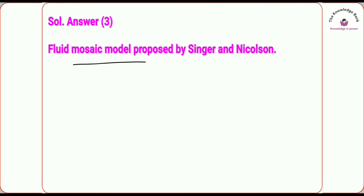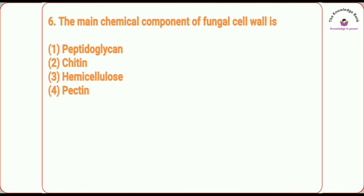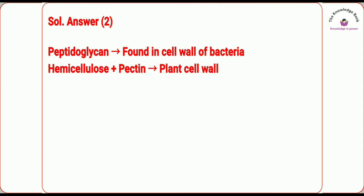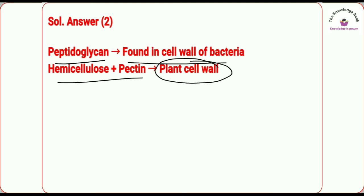Question number six: the main chemical component of the fungal cell wall is 'dash.' The options include chitin, hemicellulose, pectin, and peptidoglycan. The correct answer is chitin. You must remember that peptidoglycan is found in the cell wall of bacteria, and hemicellulose plus pectin are present in the plant cell wall.